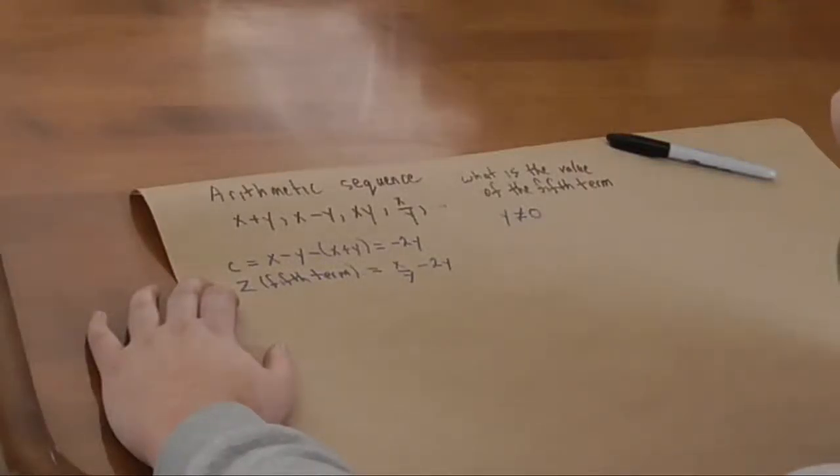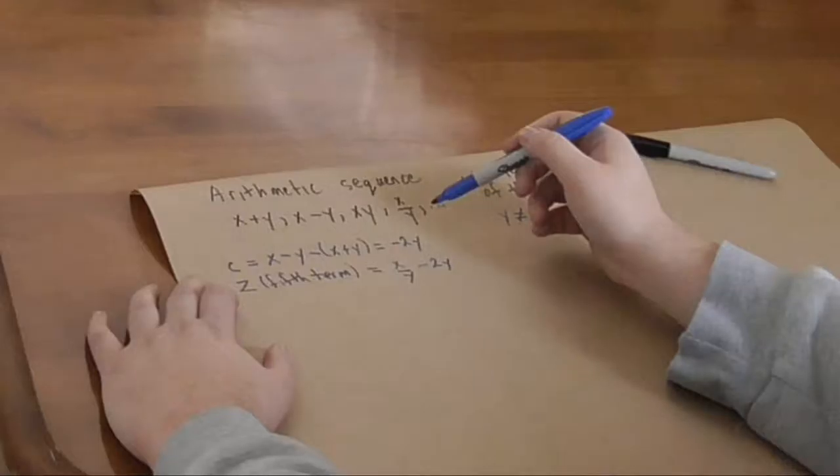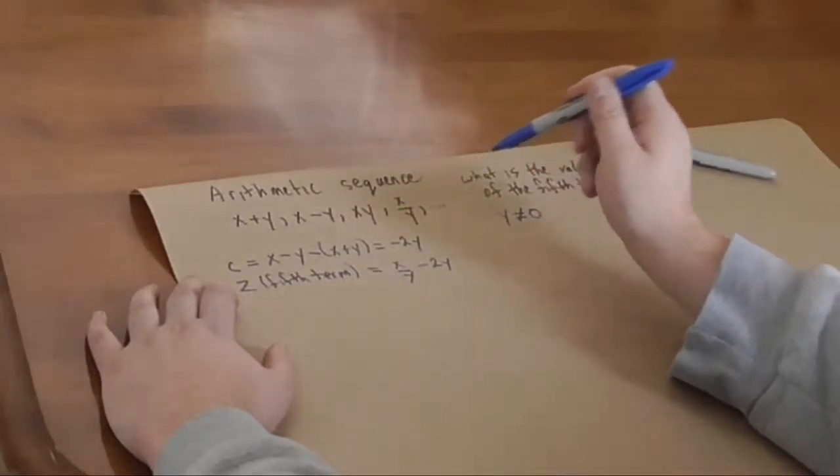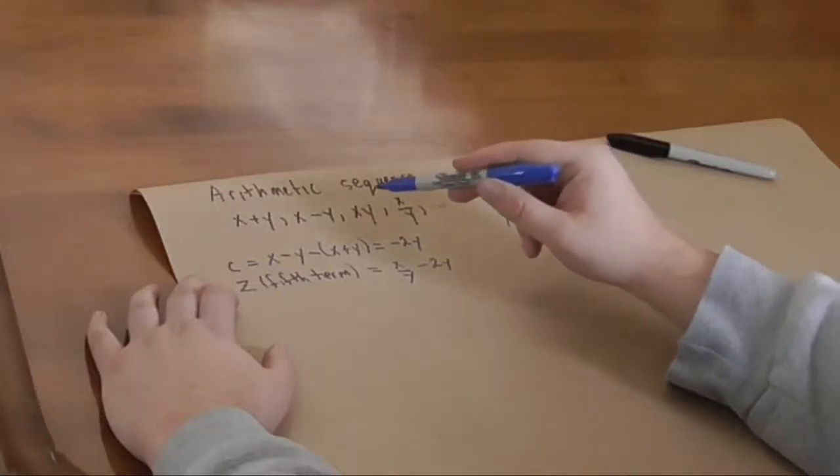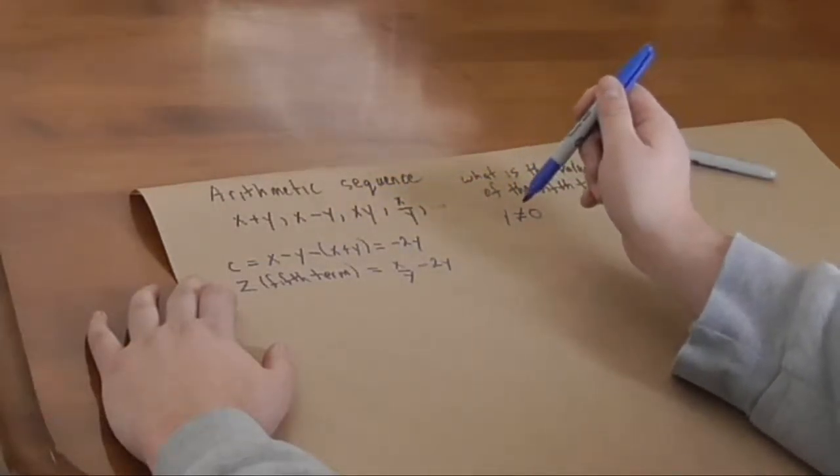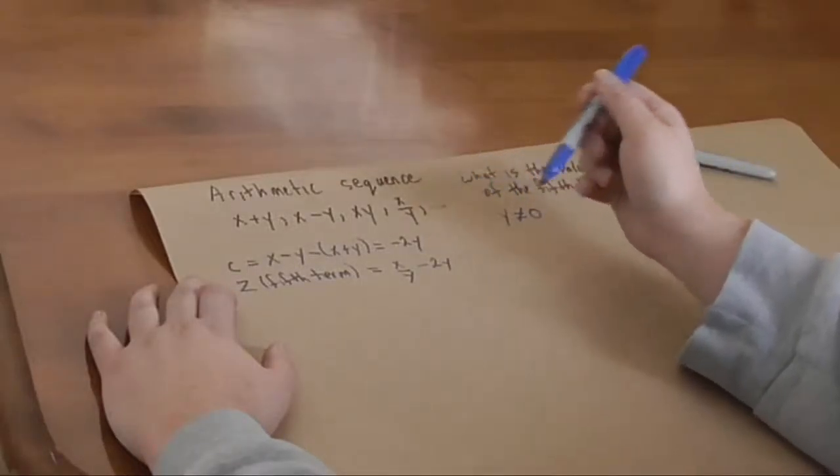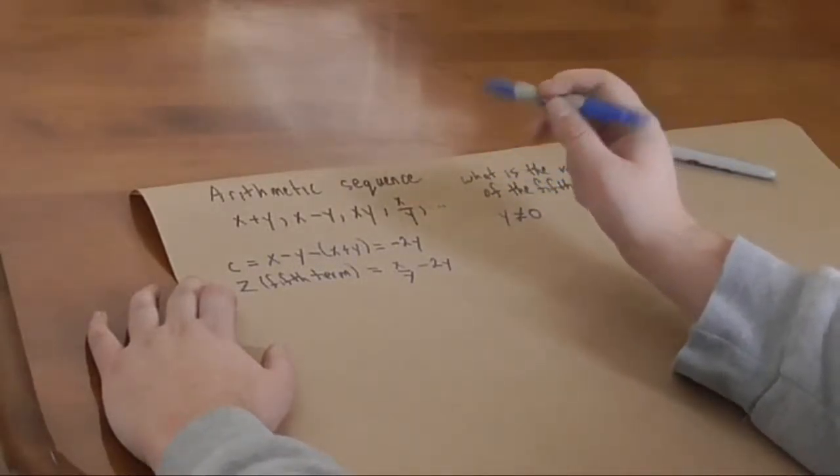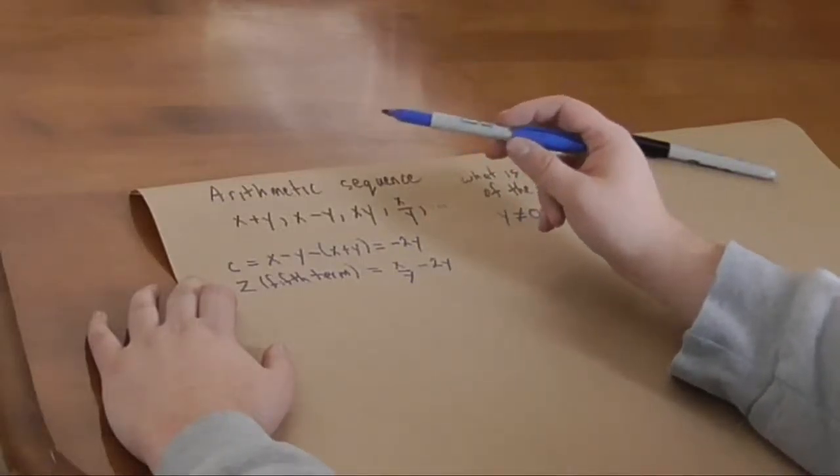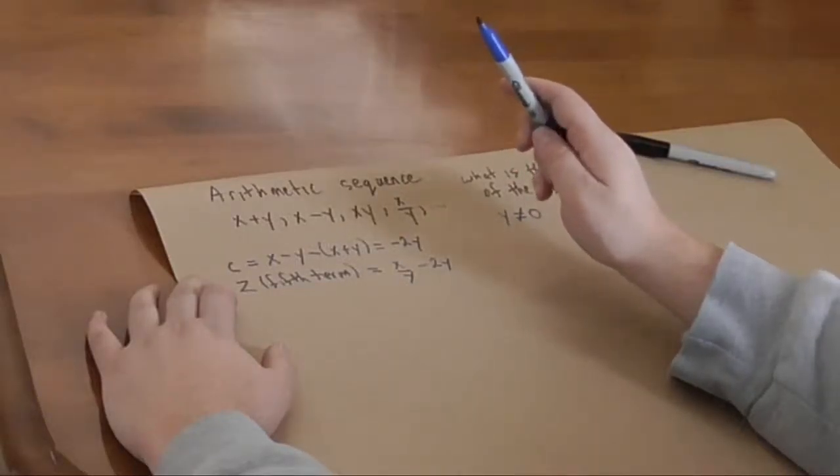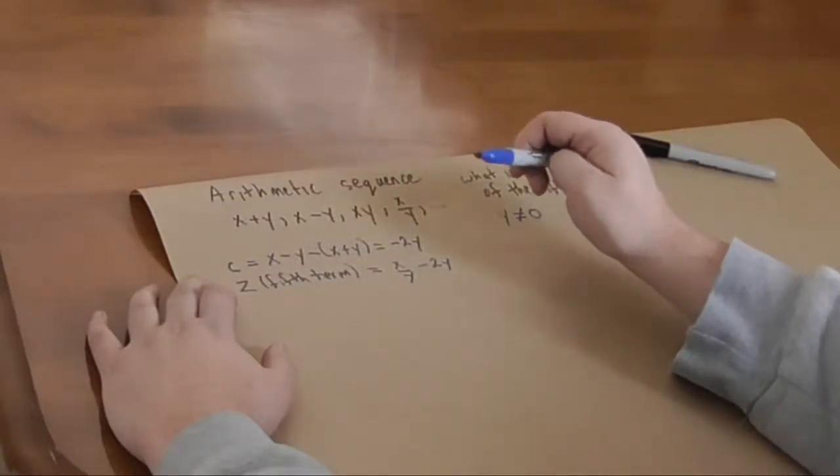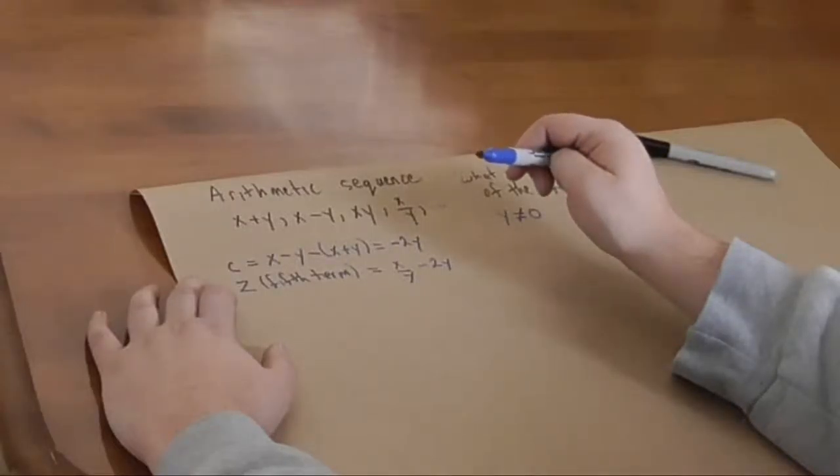Now, we could, there's a couple of ways we could proceed. We could set x over y minus xy equals minus two y, and xy minus x minus y equal to minus two y, and use those two equations somehow to solve for x and y. I tried that. And that turned out to be very complicated. And I ended up with a quadratic equation that I had to solve. That wasn't particularly friendly.